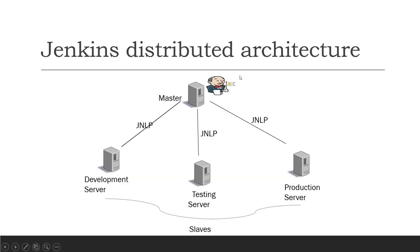In my last video we had covered Jenkins distributed architecture, where we had seen that we can connect the master with different servers — for example development, testing, or production — which are the slave machines. We can create a connection between master and slaves using JNLP.